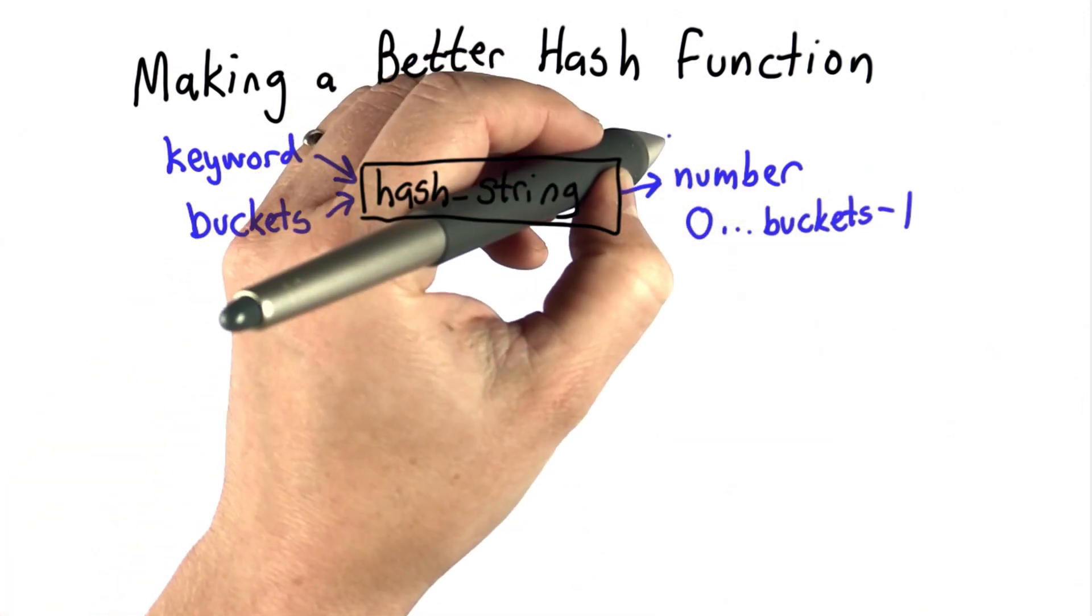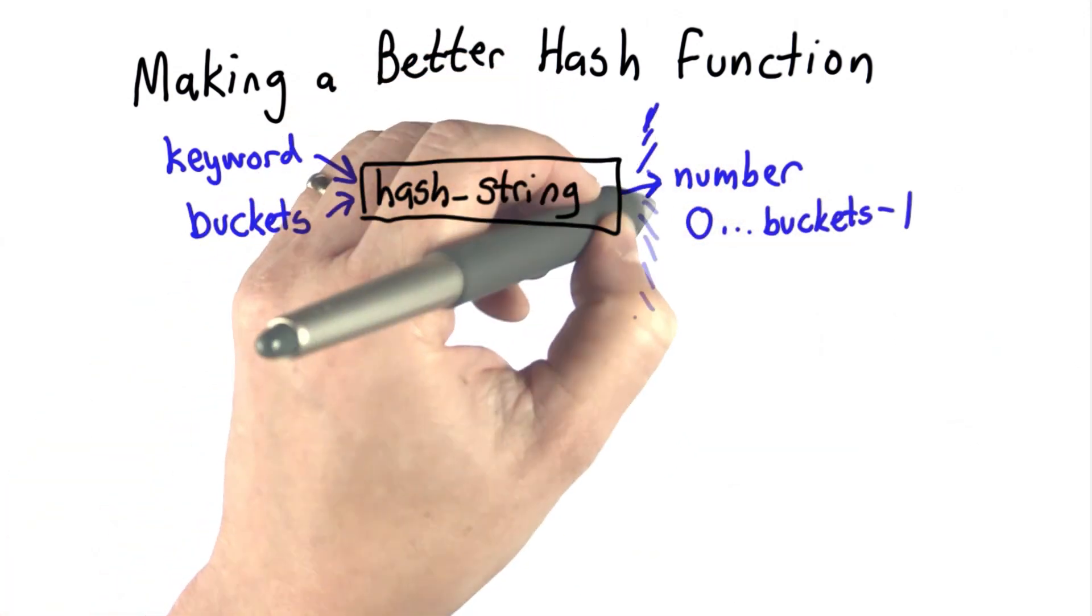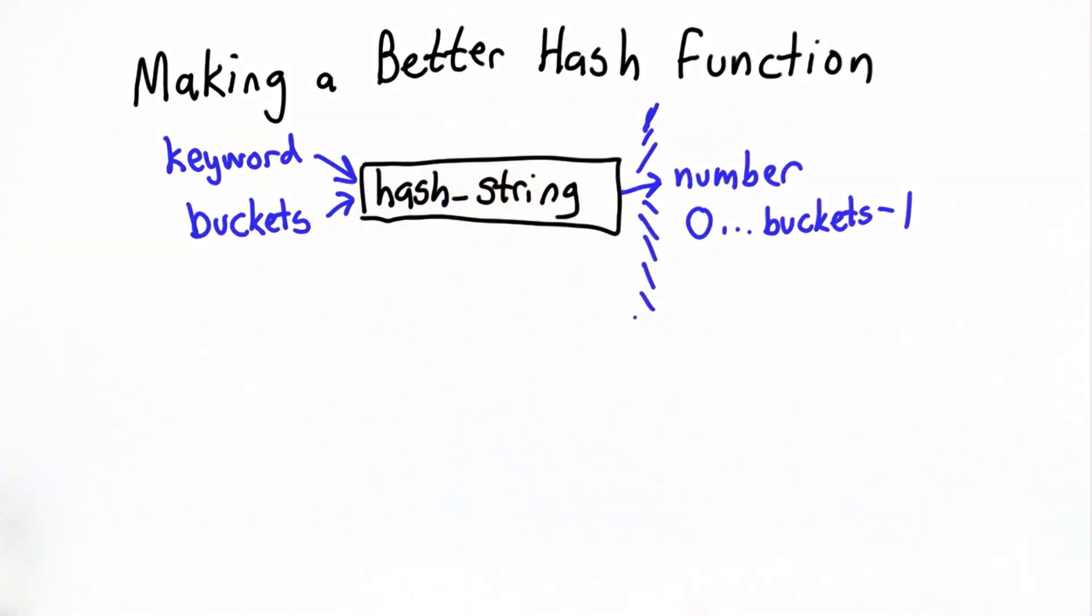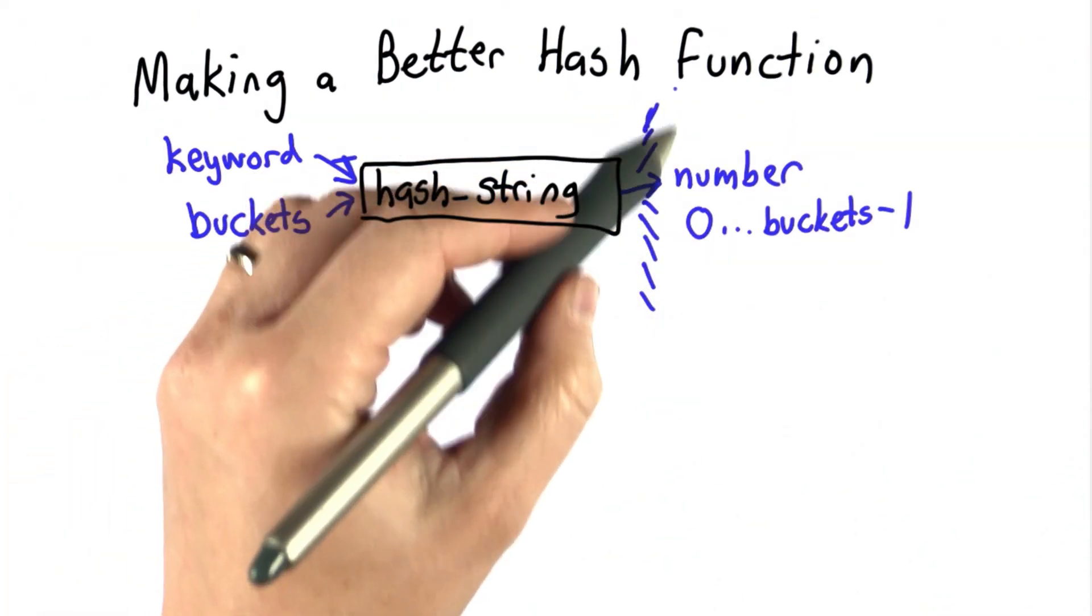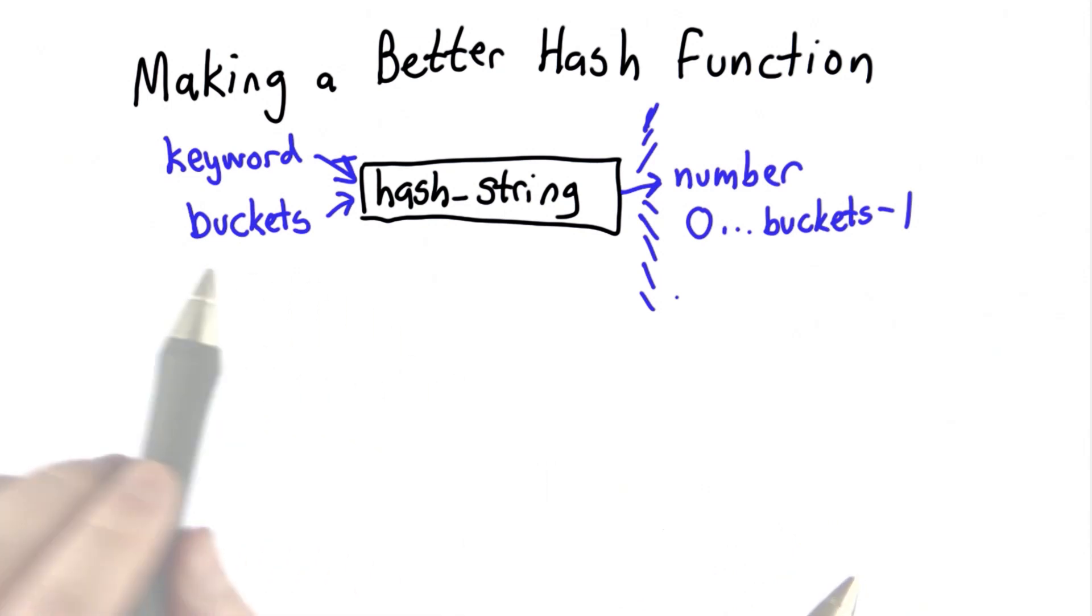Our goal is for these numbers to be well distributed. We can have any number of buckets we want, the keywords will be spread evenly among the buckets, and every time we hash the same keyword, we'll get the same bucket so we'll know quickly where to find it.